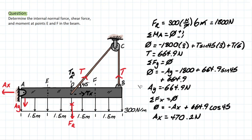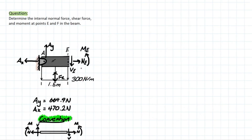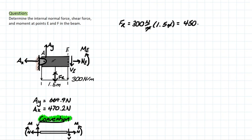Now we can start isolating our cuts and figuring out what the internal forces are at these points. I'll do point E first, taking the left side from cut E because it's simpler to analyze. Now we have the cut made, following the convention from our previous videos, and AY and AX are already solved for. But we need to re-solve for FR because now we're considering a smaller span — only 1.5 meters. So FR equals 300 newtons per meter multiplied by 1.5 meters, giving us 450 newtons.